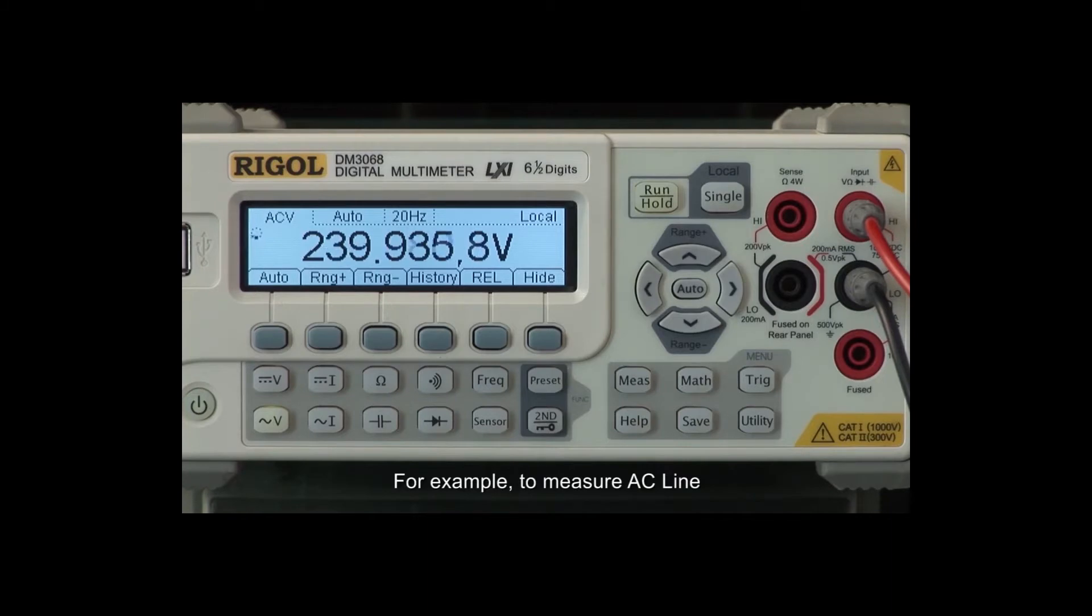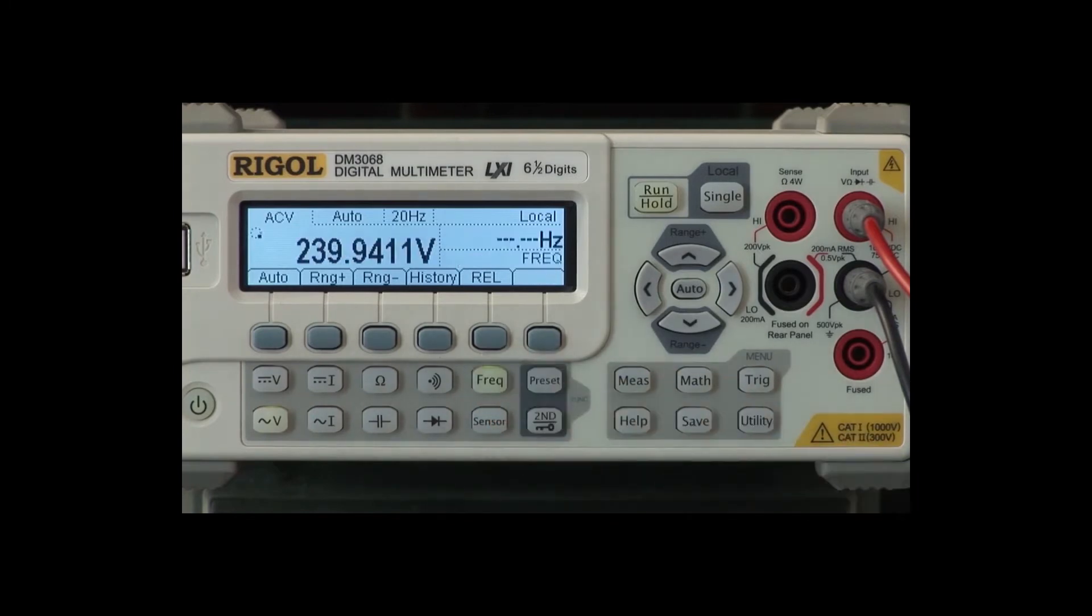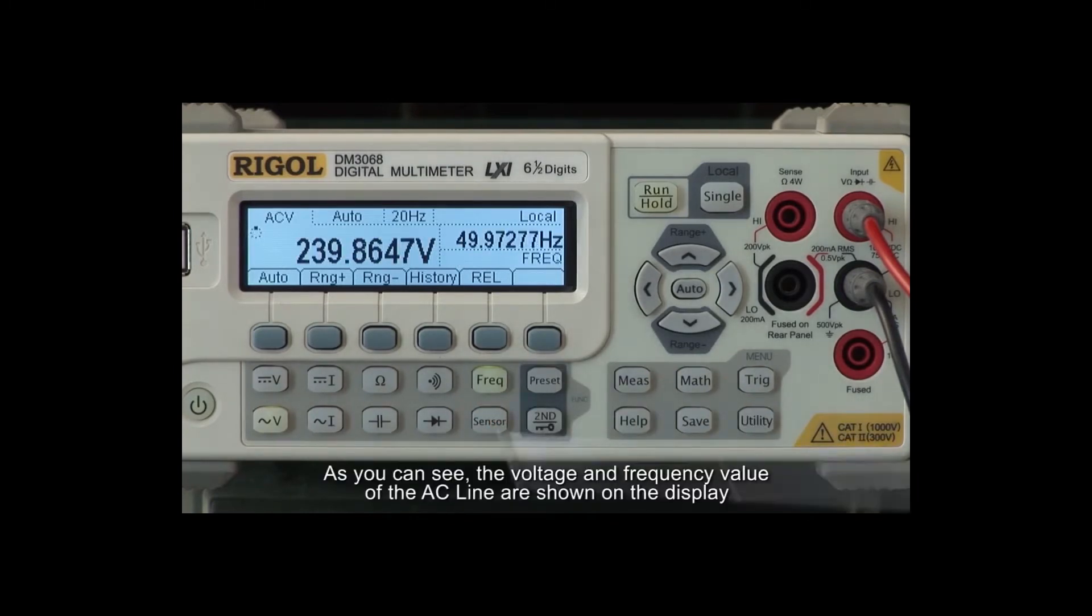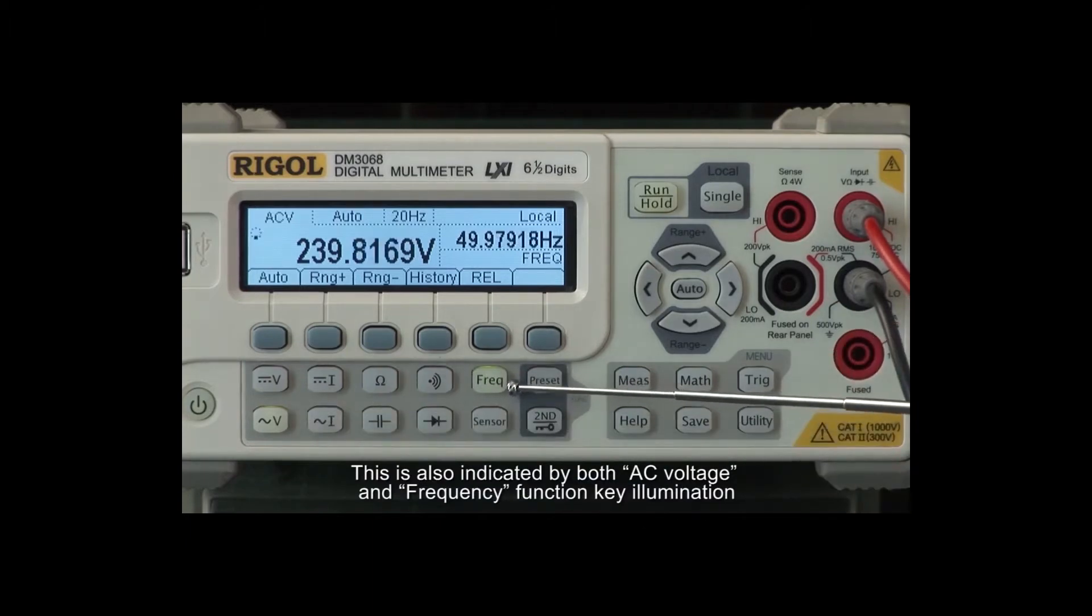For example, to measure AC line, first select the AC voltage measurement, then press the Secondary Function Key. Finally, press the Frequency Measurement Key. As you can see, the voltage and frequency value of the AC line are shown on the display. This is also indicated by both AC voltage and frequency function keys being illuminated.